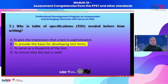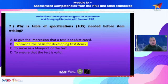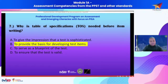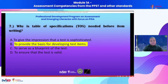The answer is option B — to provide the basis for developing test items. Why not option A? The goal of item writing is not just about making a test complex or sophisticated, or giving the impression that it is sophisticated. Although we want a test that has some level of sophistication, that is not the reason why we construct a table of specifications.